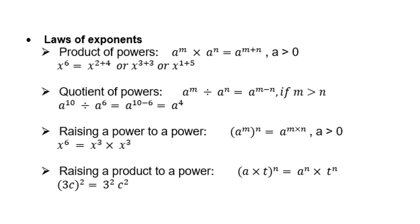Raising a product to a power: (a times t) to the power n — you must distribute the n to both a and t. For example, (3c) squared becomes 3 squared times c squared, and of course 3 squared is 9.